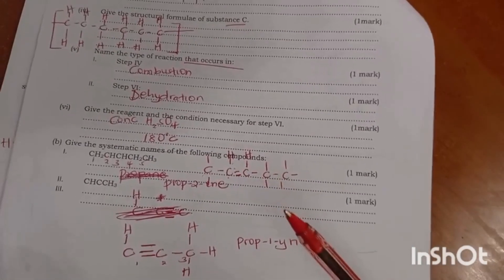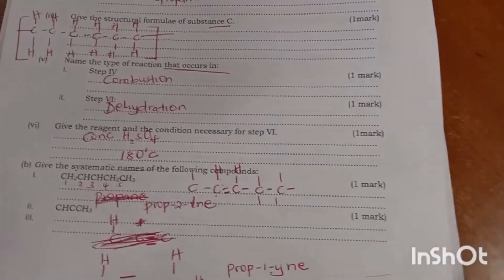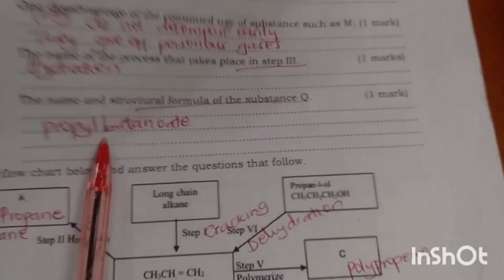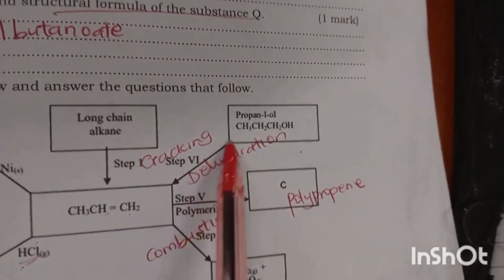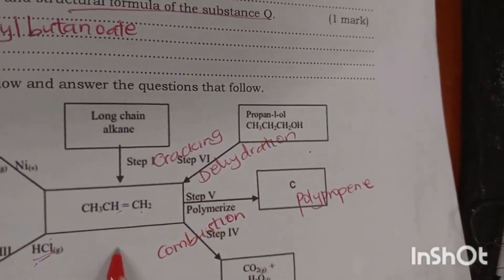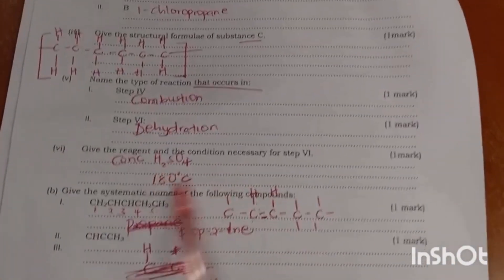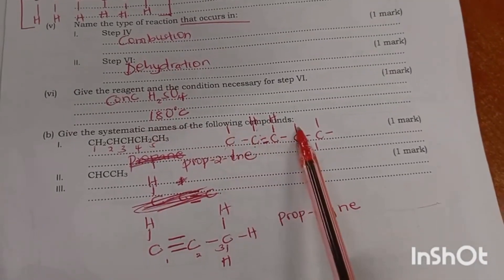Step four is combustion. Step five is dehydration. Give the reagent and conditions necessary for step six — in step six you are converting propanol to propene. You require concentrated sulfuric acid and a temperature of 180 degrees Celsius.